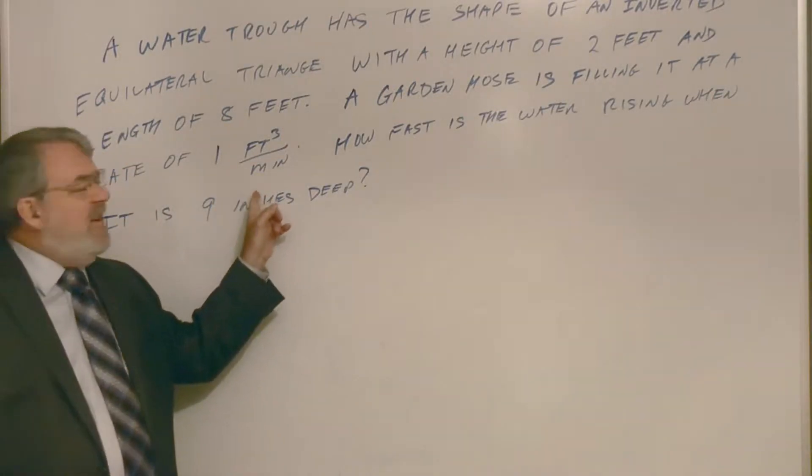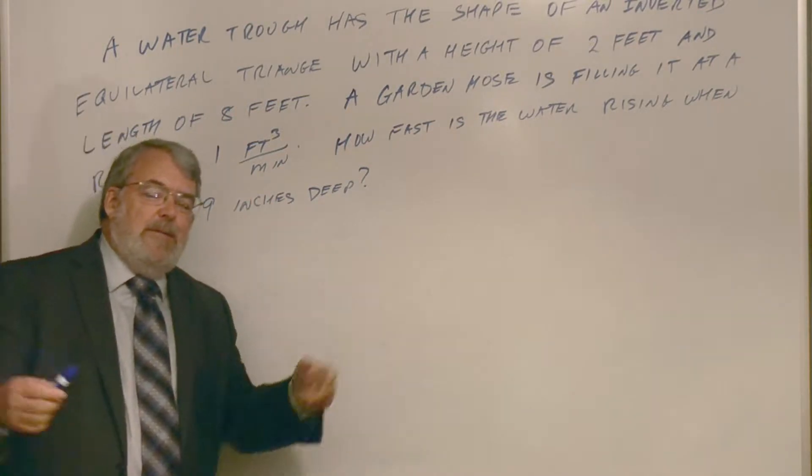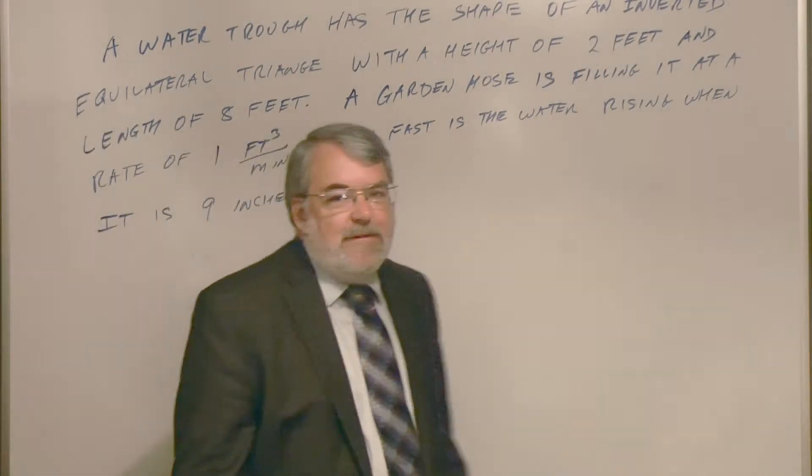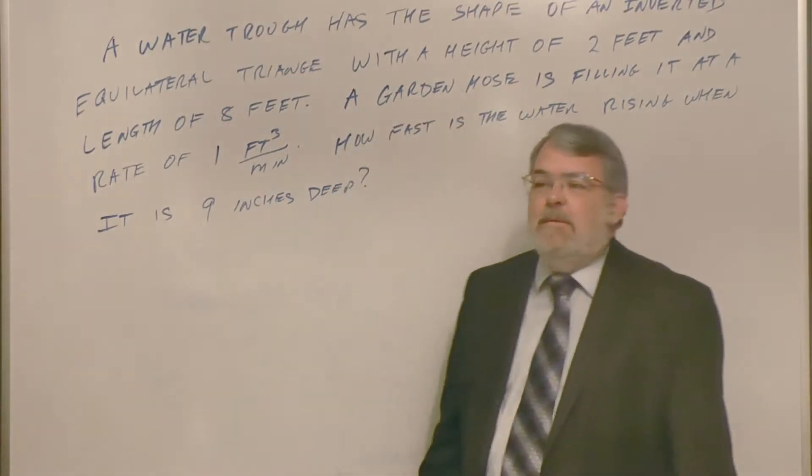A garden hose is filling it at a rate of one cubic foot per minute. How fast is the water rising when it is nine inches deep? Actually this is a little bit unrealistic. I think it's more like maybe about 0.8 cubic feet per minute, but I thought I'll just give it simple. We'll call it one cubic foot.